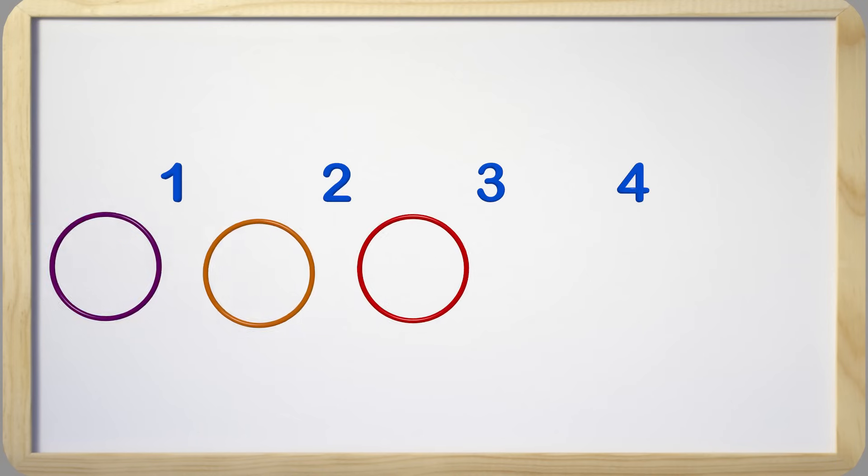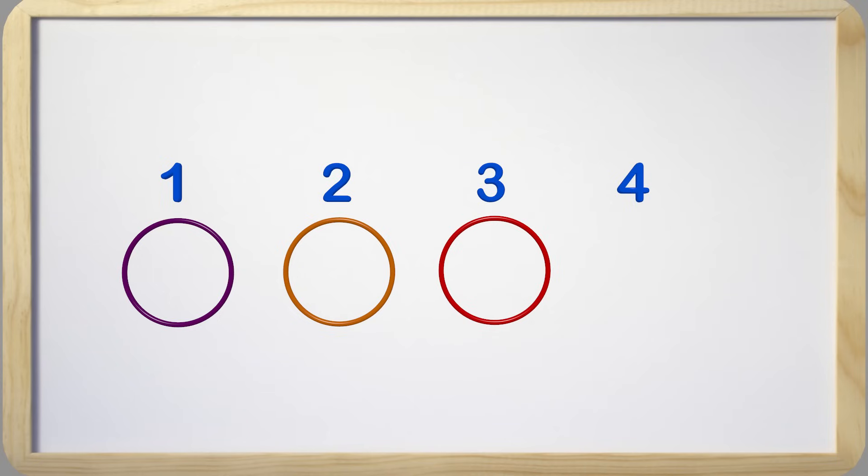Sometimes things cannot be divided equally, and there are some left over. One example I remember was when my sisters played hula hoop with their friends. There were four girls in all, but only three hula hoops.